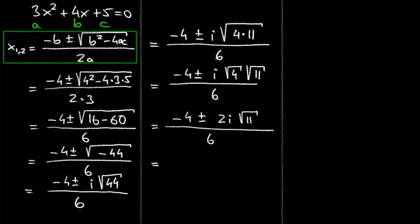Now we can split the fraction to negative 4 over 6, plus or minus 2i times the square root of 11 over 6. 4 divided by 2 is 2 and 6 divided by 2 is 3; 2 divided by 2 is 1 and 6 divided by 2 is 3.